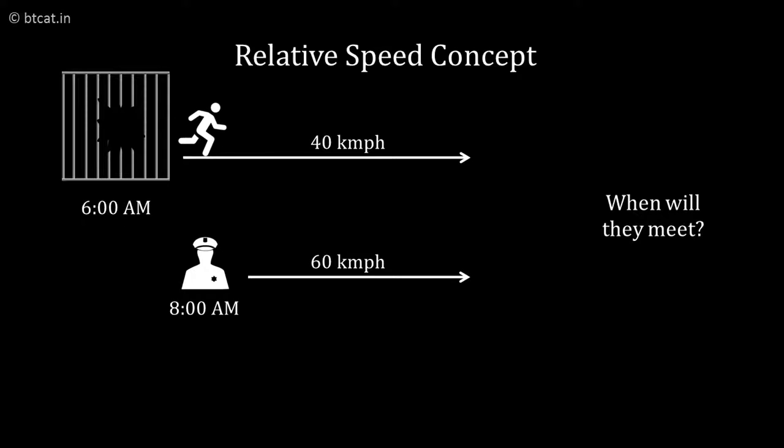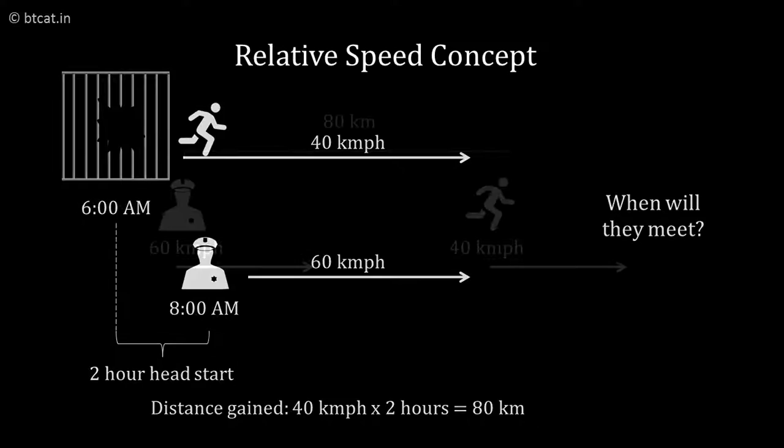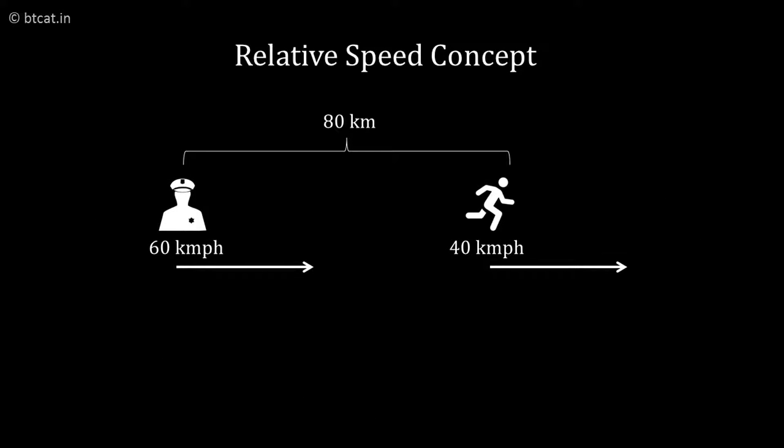The thief will run for 2 hours from 6 to 8, and the distance traveled will be 40 times 2, which is 80 km. You can understand the question as: when the police starts, the thief is already ahead by 80 km. So the police has to cover 80 km.